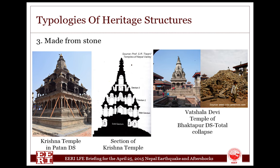The third typology is temples made from stone. Krishna temple of Patan Darbar Square is the famous stone temple built in 1723. It did not suffer any damage in this earthquake. However, another stone temple called Vatsala Devi temple of Bhaktapur Darbar Square, which was built in 1672, was completely destroyed by the earthquake.